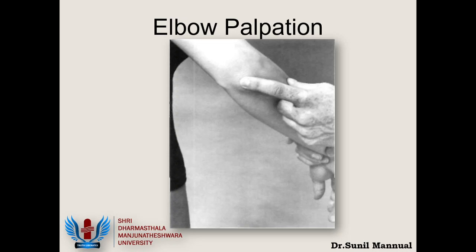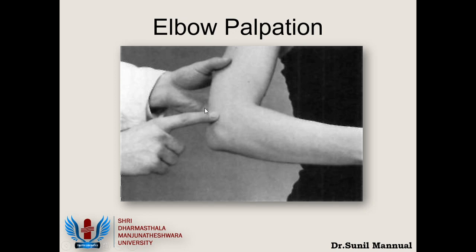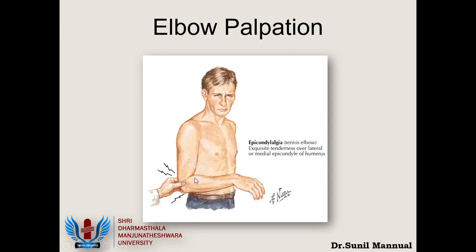The next bony prominence is the lateral epicondyle. To localize it, feel the supracondylar ridge higher up, and as you come down you will find a nice bony prominence — that is the lateral epicondyle. When you palpate the lateral epicondyle, sometimes you can find tenderness there, which is a sign of lateral epicondylitis, also called tennis elbow — a very common condition with an easy clinical diagnosis.